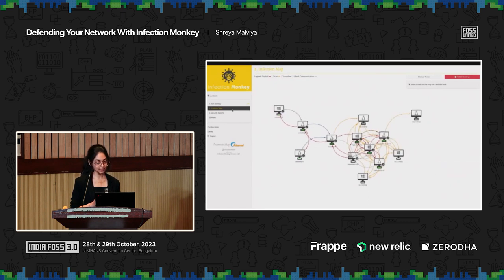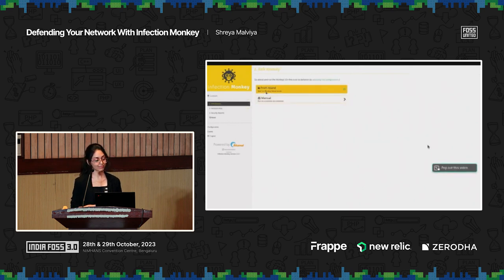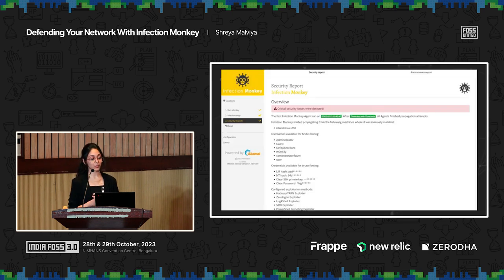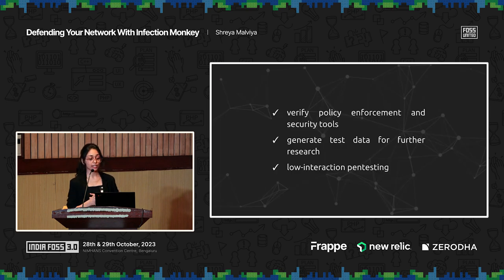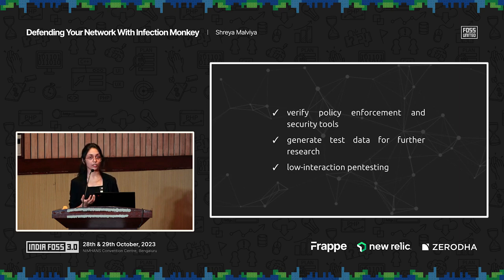Once you're done, you can go to the security report, which tells you in detail how Infection Monkey ran on your network — which exploits were successful, where credentials were stolen from, which services were found open on which machines. This is really helpful because you can verify that any security solutions you have in place — whether antivirus, EDR, or intrusion detection — should technically be triggered by Infection Monkey's activity. You can verify they're working as expected, and fix anything that isn't protecting you.